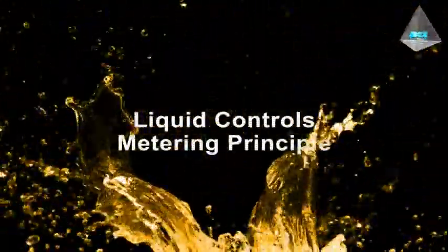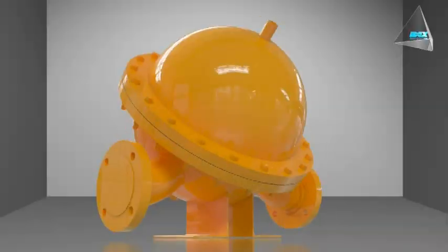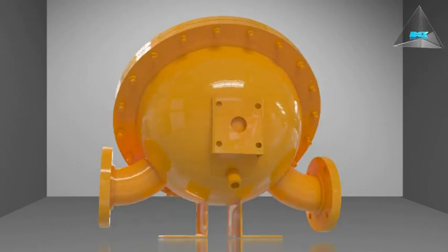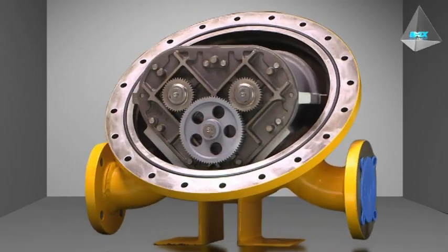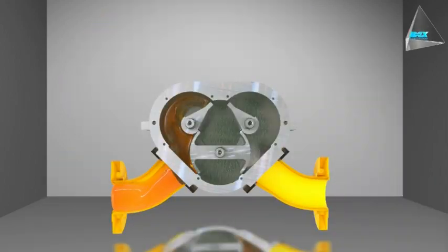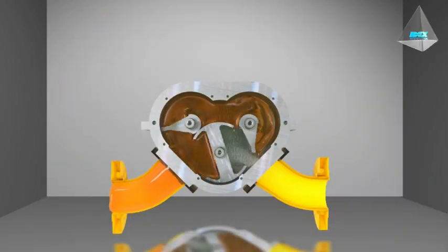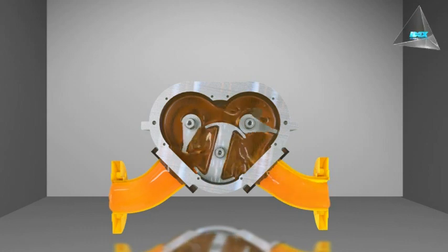The Liquid Controls metering principle: A Liquid Controls positive displacement flow meter is, in a sense, a hydraulic motor with high volumetric efficiency that absorbs a small amount of energy from the flowing stream. This energy is used to overcome internal friction in driving the meter and its accessories.